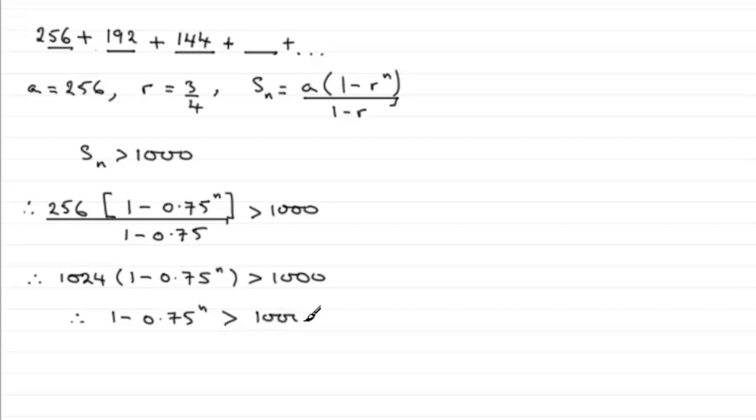So if we do that, we get 1 minus 0.75 to power n is greater than 1000 divided by 1024. Let's just write that in. And you've got to be careful with inequalities—if you divide by a negative number or multiply by a negative number, remember you must reverse the inequality sign.